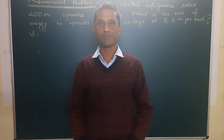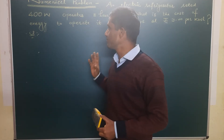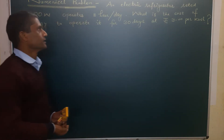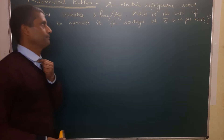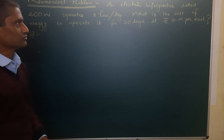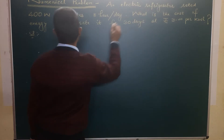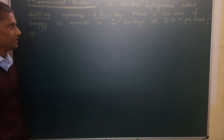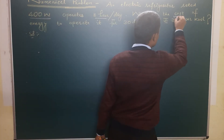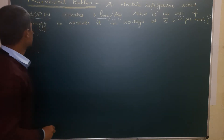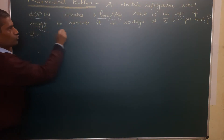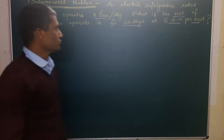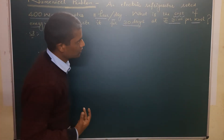Hello, this is Akshay with another video. In today's video we are going to take on a numerical problem based on electrical energy consumed by a given electric appliance. An electric refrigerator rated 400 watts operates eight hours per day. What is the cost of energy to operate it for 30 days at rupee 3 per kilowatt hour?